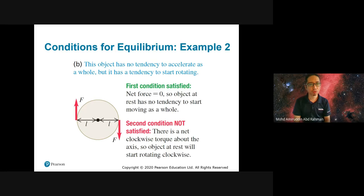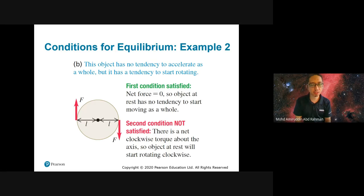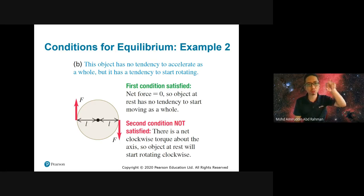In the second example, we have 2F going up with nothing going down. The net force is still zero, but now the torque is not zero because we have a net torque in the clockwise direction — so the object is going to rotate. This is not in equilibrium because the torque is not zero.